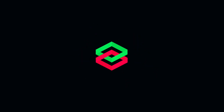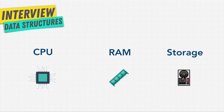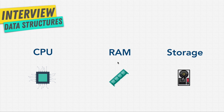In order to truly understand the value of data structures, we have to go deep down into the way a computer works at the fundamental level. In order for a computer to run code, it needs to keep track of things like variables, numbers, strings, and arrays. These variables are stored in what we call Random Access Memory, or RAM for short. That's how programs run.